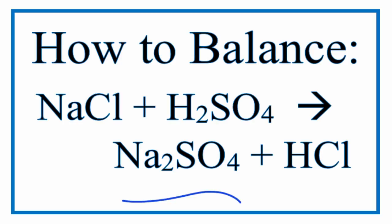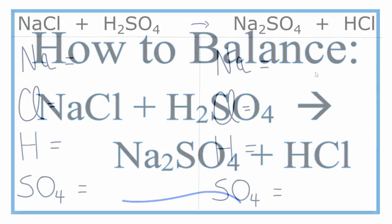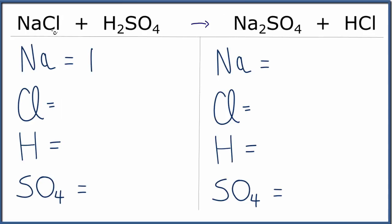Let's take and add up the atoms on each side of the equation. We have one sodium, we have one chlorine, we have two hydrogens, and here I've written the SO4 just as one thing. We have an SO4 here and an SO4 here, so we can just call it SO4.